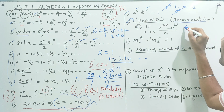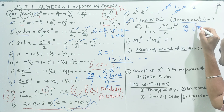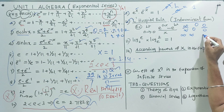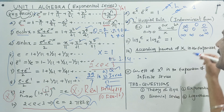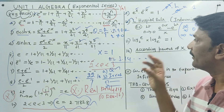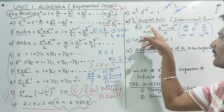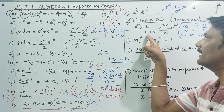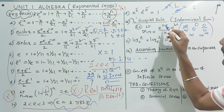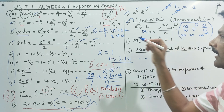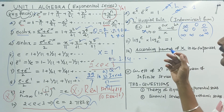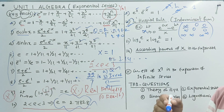Indeterminate forms: infinity by infinity, zero power zero, zero divided by zero, infinity into infinity, infinity power infinity. For example, limit x tends to zero of e power ax minus e power bx by x. You can apply the answer. Log e base 2 into log 2 base e — this is inverse, so they cancel to 1.